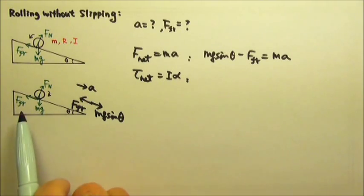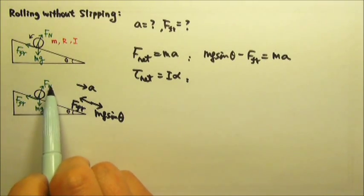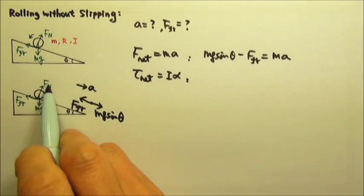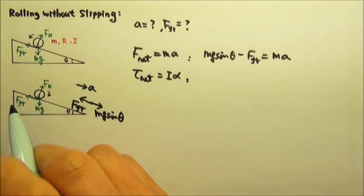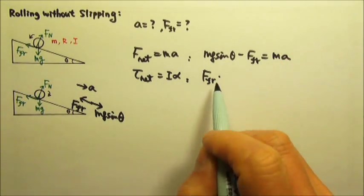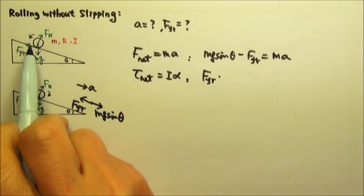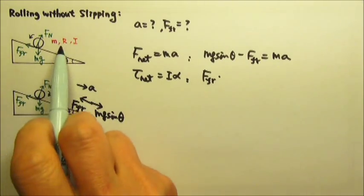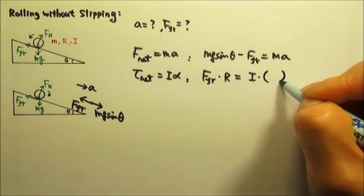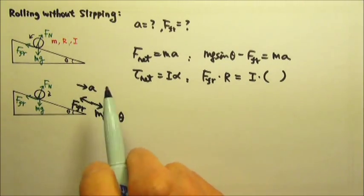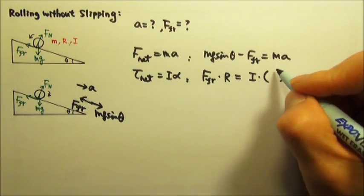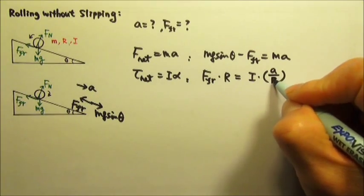Then we have to write the torque equation. The net torque comes from friction, because both mg and the normal force pass through the axis and therefore have no lever arm. So friction is the only force that provides torque. It's force times the lever arm, and the lever arm for friction is r. So friction times r equals Iα. Since it's rolling without slipping, α and a are related: α can be replaced with a over r.